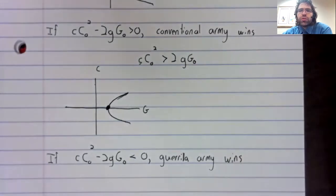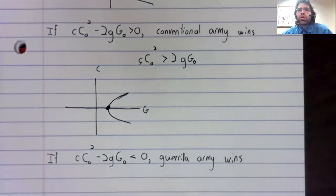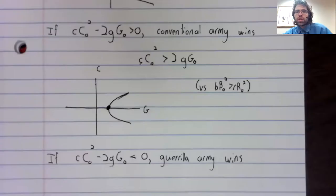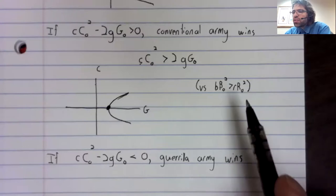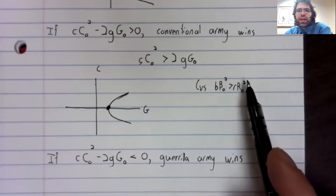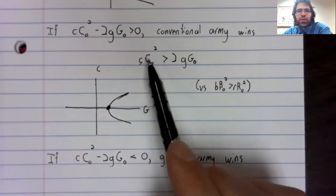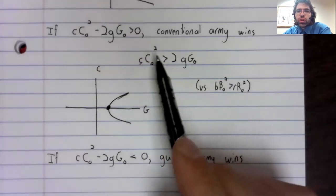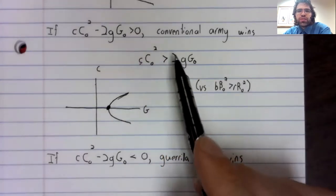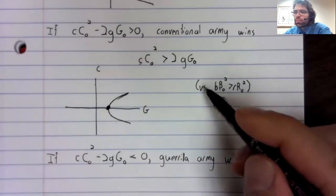When we had two conventional armies, we had terms that looked the same. I mean, what I mean by that, both sides had the square, neither side had a two. Here, these don't look similar, and it's a little harder to interpret.